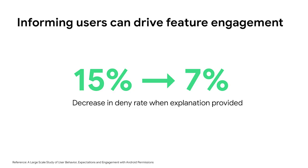Research shows that the more informed users are, the more likely they are to engage. For example, one recent study showed a decrease of over 50% in the deny rate by users when permission requests were provided with an explanation. We want to provide relevant user data and security information so that users can make the right choices for themselves.